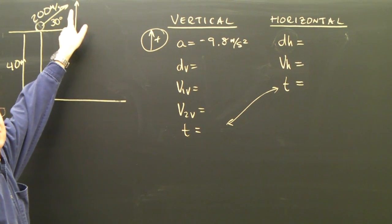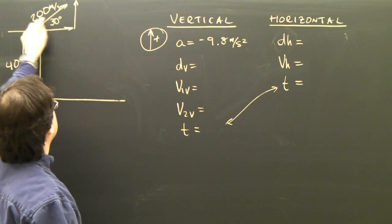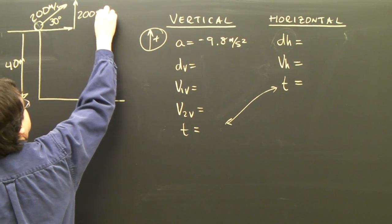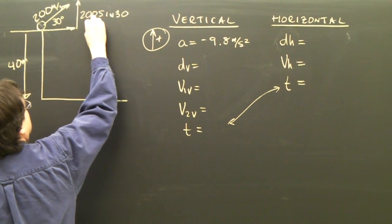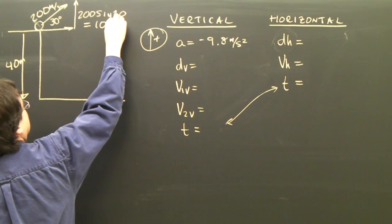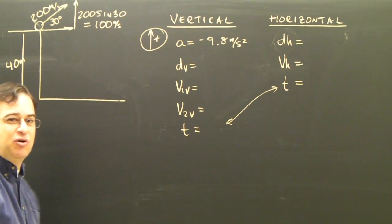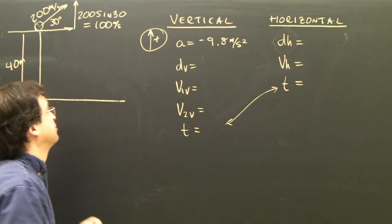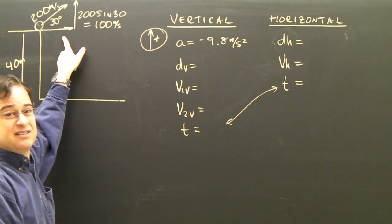And you calculate this, since it's the opposite side of my triangle, it's going to be 200 times sine 30, which is 100 meters per second. So when it's going at 200 meters per second this way, it's actually going up at 100 meters per second. This is the adjacent side.